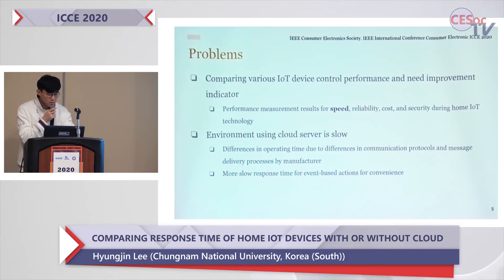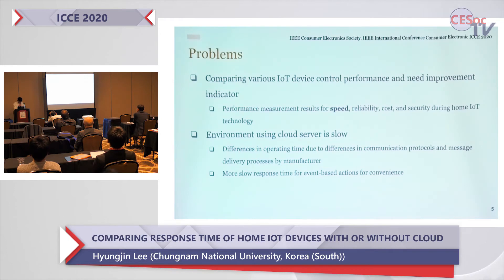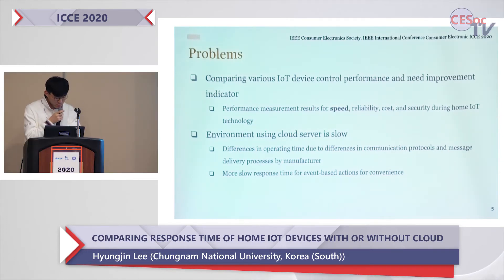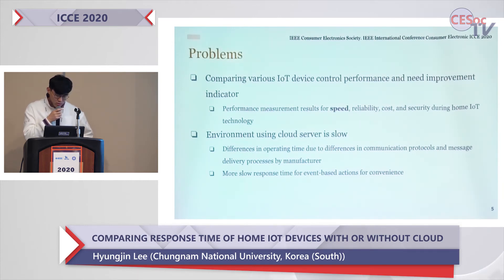The biggest factor affecting speed is the use of the cloud server. The information contained in the packet message, the encryption processing, and the distance to the server all have a great effect on the communication environment. Many manufacturers also have different methods of communication. Even event-based services need additional service servers.